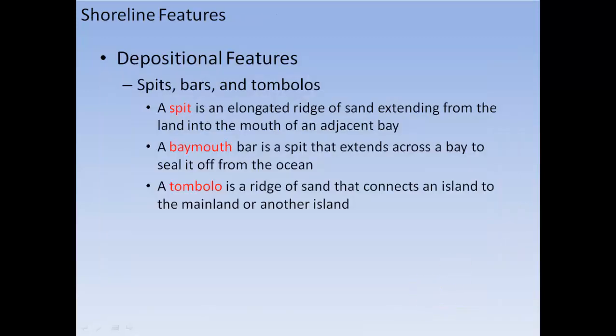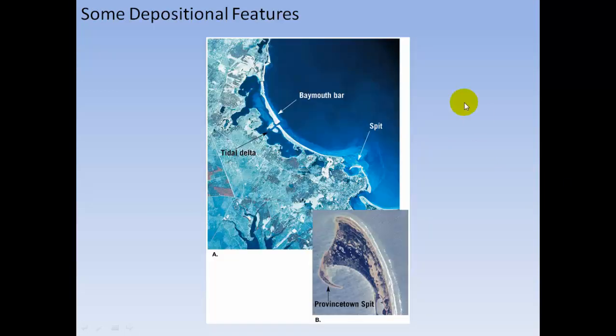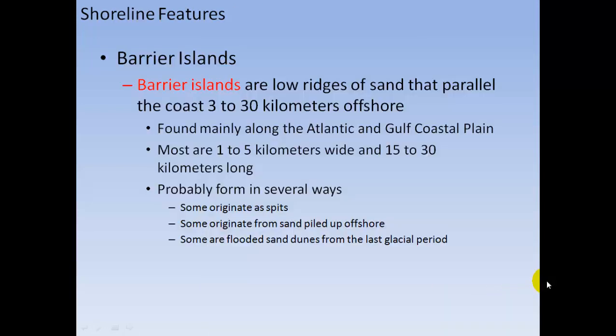Spits, bars, and tombolos are depositional features. A spit is an elongated ridge of sand extending from land to the mouth of an adjacent bay. A bay mouth bar is a spit that extends across a bay to seal it off from the ocean. A tombolo is a ridge of sand that connects an island to the mainland or to another island. Here is a bay mouth bar crossing a bay — broken for a navigational channel — and a spit reaching back into the bay, such as the Provincetown spit at the end of Cape Cod. Barrier islands are low ridges of sand parallel to the coast, 3 to 30 kilometers offshore, mainly found on the Atlantic and Gulf Coastal Plains, 1 to 5 kilometers wide and 15 to 30 kilometers long, probably formed in several ways.